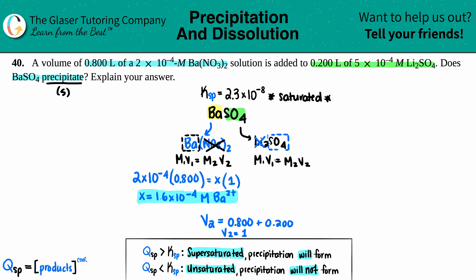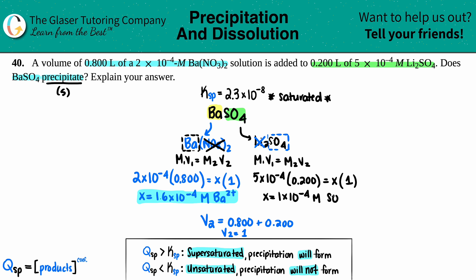Now for sulfate: the starting molarity from Li₂SO₄ is 5×10⁻⁴, and its initial volume was 0.200 L. Using M₁V₁ = M₂V₂: x = (5×10⁻⁴ × 0.200) / 1 = 1×10⁻⁴ M. That's the new molarity of the sulfate ion after mixing — one-to-one in the original compound.